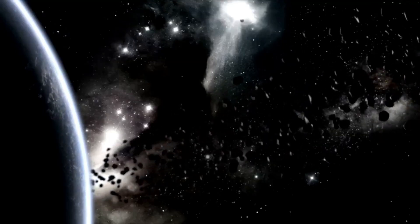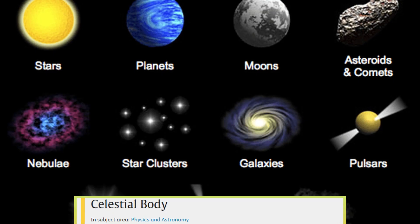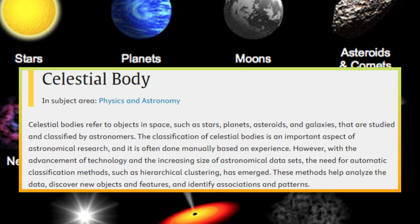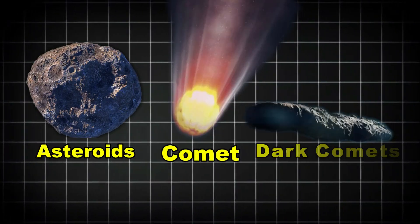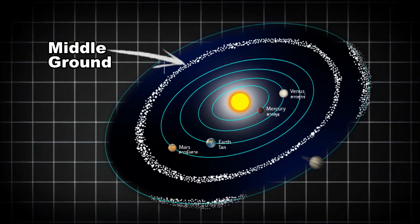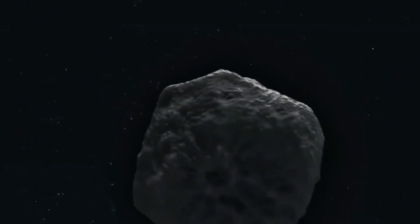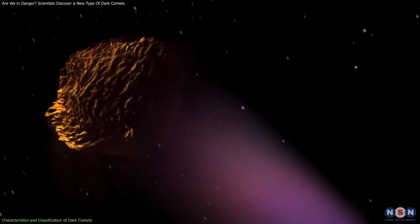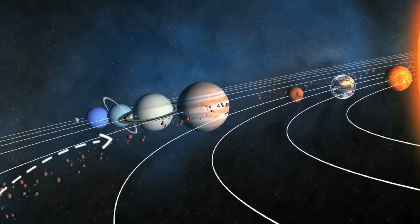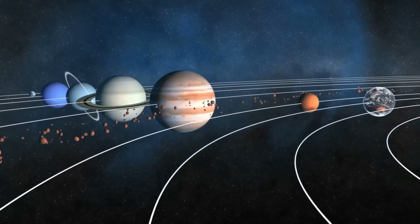These dark comets are objects that defy traditional definitions. While we typically categorize celestial bodies into clear boxes, asteroids or comets, dark comets seem to occupy a middle ground. They behave like comets, accelerating due to some form of outgassing, but they lack the visible tail.